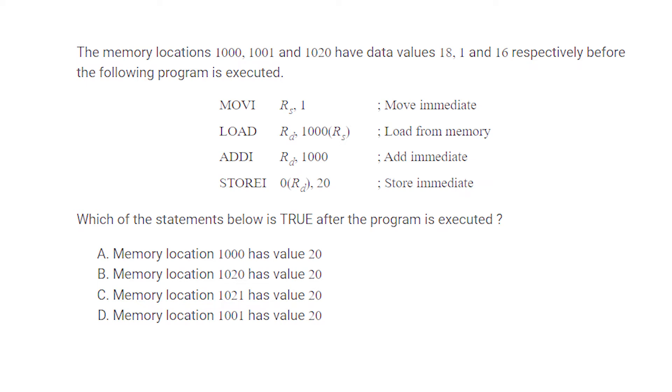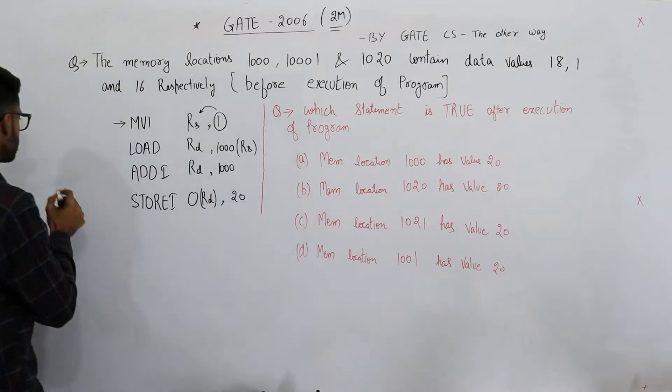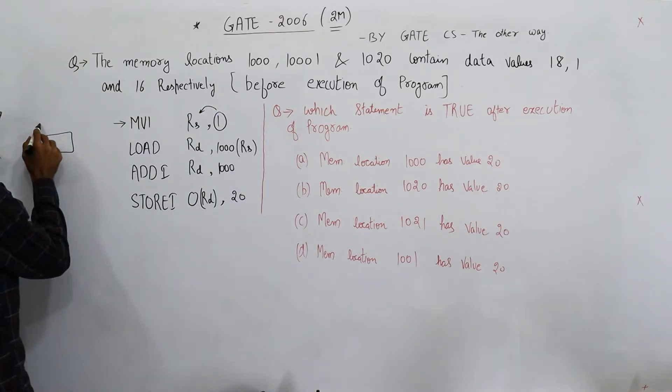Let's analyze this program first. I haven't noted down the meanings of these instructions, but I'll display the question anyways. MVI is for move immediate - that means you're trying to move this value 1 into this register. So register Rs contains 1 according to this first line.